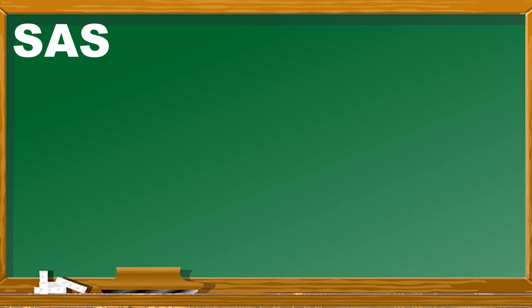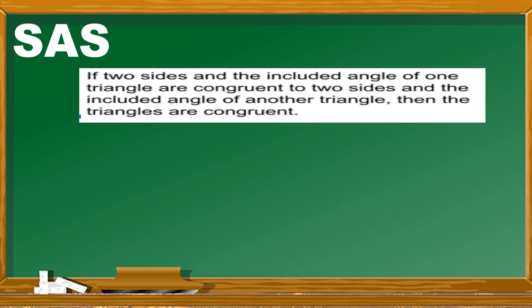Next is SAS, which stands for Side-Angle-Side. If two sides and the included angle of one triangle are congruent to the two sides and the included angle of another triangle, then the triangles are congruent. The included angle is the angle between two sides — it is sandwiched between the two sides.